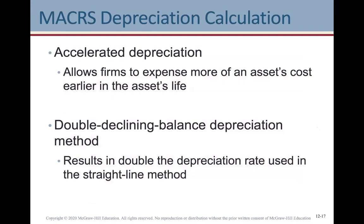Accelerated depreciation allows firms to expense more of an asset's cost earlier in the asset's life. Governments offer this to incentivize firms to purchase more capital goods. An example is Northern Alberta oil sands projects, where firms could previously write off all capital costs against royalties paid to the Alberta government for bitumen extracted. Double-declining balance is a method from financial accounting that results in double the depreciation rate used for straight-line. This is often industry-specific.